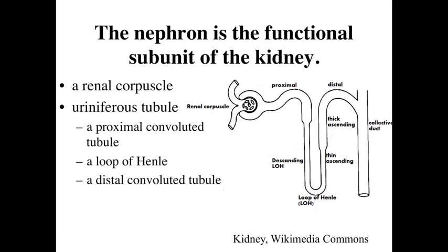We have the renal corpuscle as a filtering unit, and we're also going to have a uriniferous tubule, which is involved with modifying and processing this raw filtrate into a more mature urine - similar to what will be excreted from the body. The uriniferous tubule is composed of a proximal convoluted tubule, a loop of Henle, and a distal convoluted tubule.